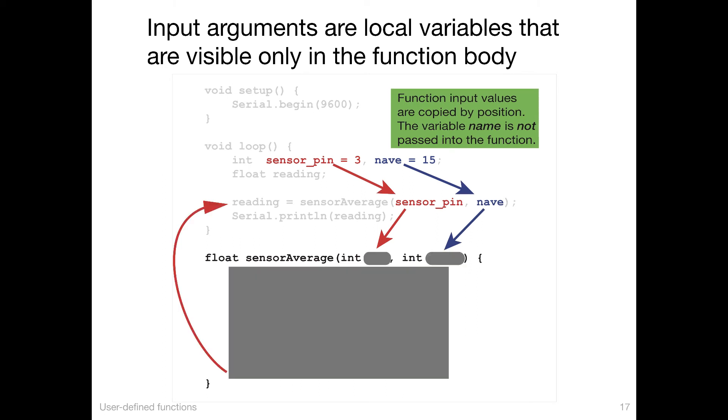So we're back to our black box. SensorAve functions as a black box with two placeholders for inputs. The first placeholder is a sensor pin number. The second placeholder is the number of readings to average. When you call the function, the names don't matter. It's the place, the order in which they appear.